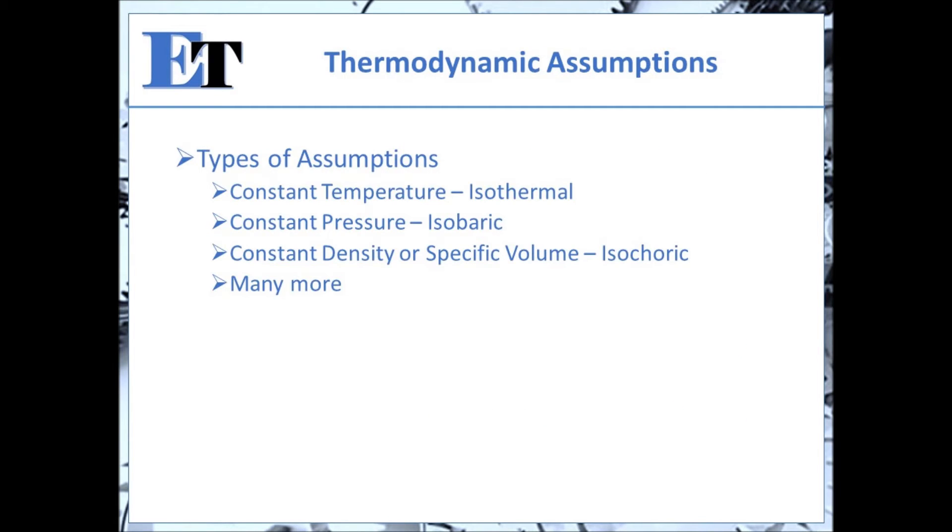Thermodynamic assumptions come in many different forms. Several examples include constant temperature or isothermal, constant pressure or isobaric, and constant density or isochoric. These are just a few of the many assumptions we often use in thermodynamics. The difficulty in conducting thermodynamic analysis typically lies in the determination of valid assumptions.